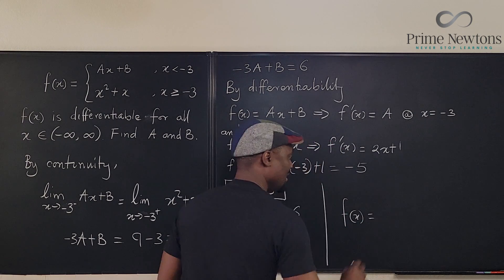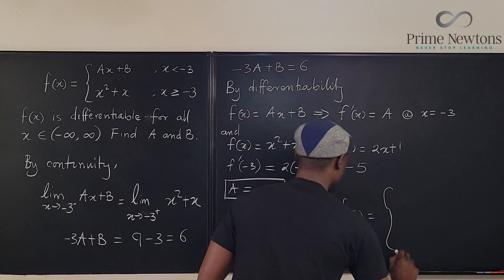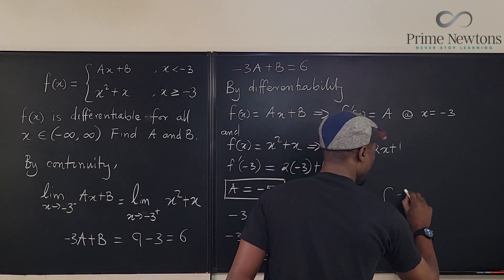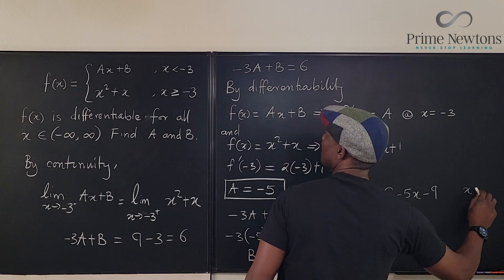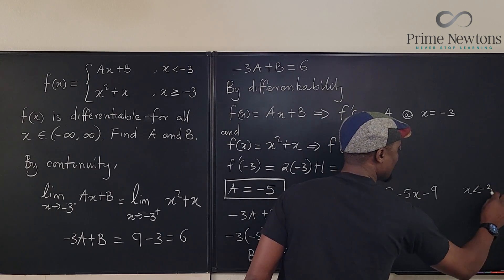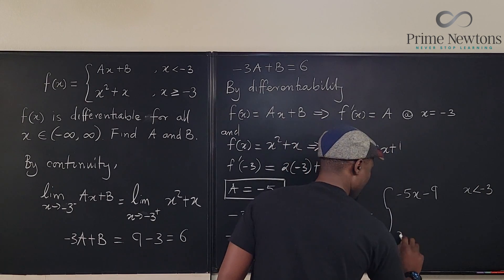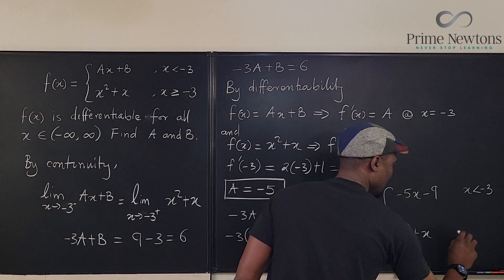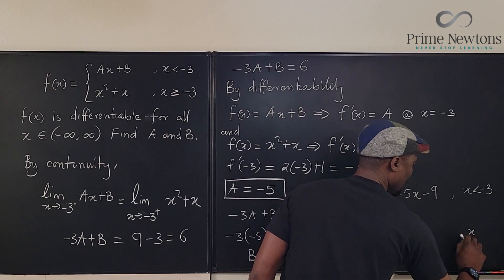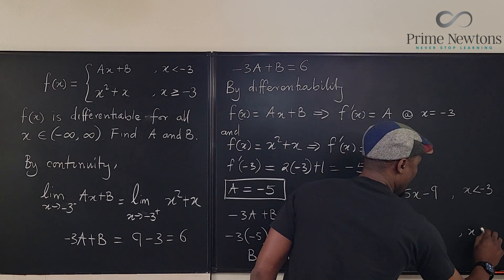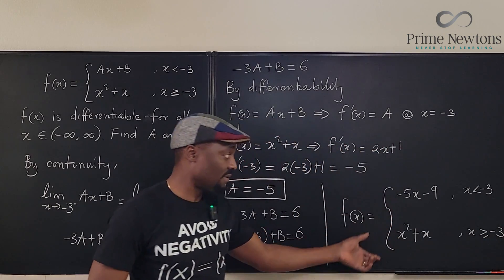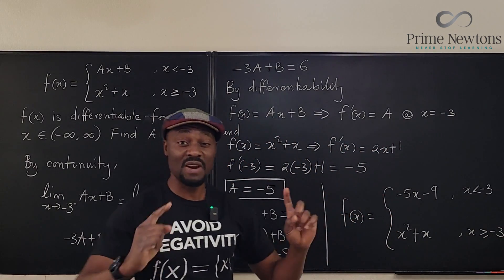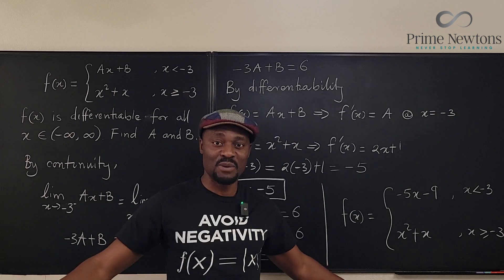f of x is equal to these two functions, minus 5x minus 9, when x is less than minus 3. And it is equal to x squared plus x, when x is greater than or equal to minus 3. So this is the function, and it is differentiable everywhere.